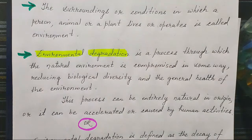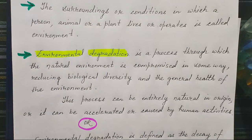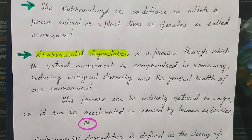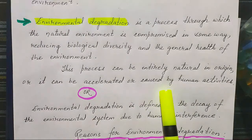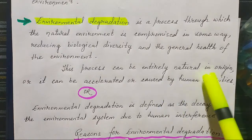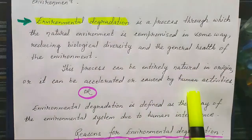Human beings are causing a lot of pollution by opening big industries and factories, and due to that all biological life forms get affected and will have adverse effects on their health — that we call environmental degradation. This process can be entirely natural, or it can be accelerated or caused by human activities.